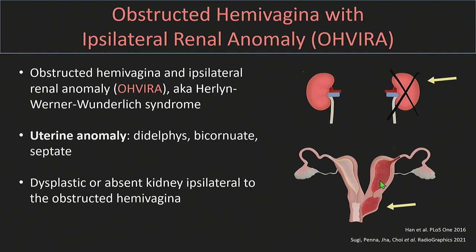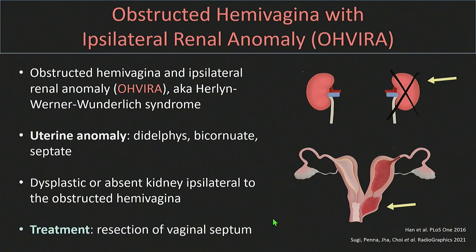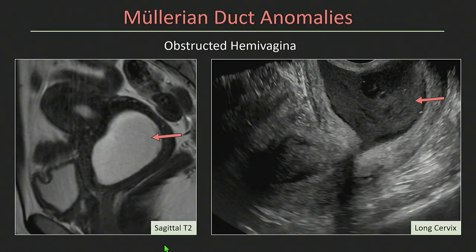Here's a diagram from one of our fellows, Dr. Penna, showing a uterus didelphys with two cervices, and this obstructed hemivagina due to an oblique longitudinal septum. Now that I recognize it, we've seen a handful of cases that presented de novo in the past couple of years. Treatment is resection of the vaginal septum.